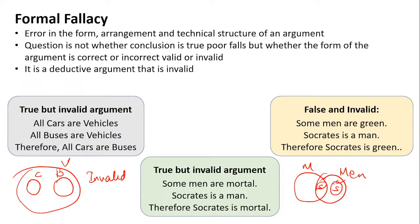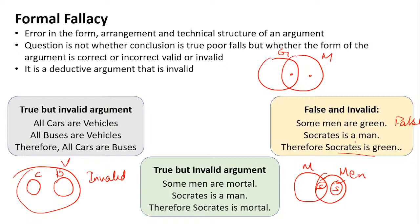'Some men are green. Socrates is a man. Therefore, Socrates is green' — this is both false and invalid. We have never seen any man who is green in color. If drawn in a Venn diagram, Socrates could fall in the green circle or not, so we cannot be sure. Since there is no certainty, it is an invalid argument.